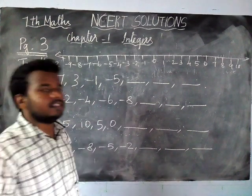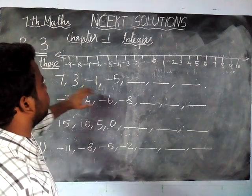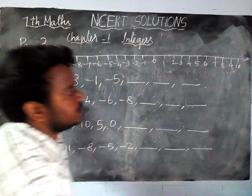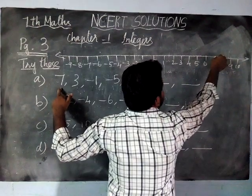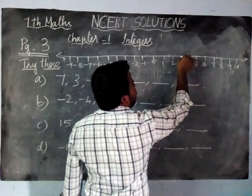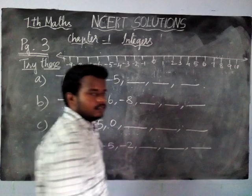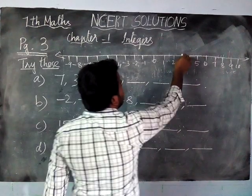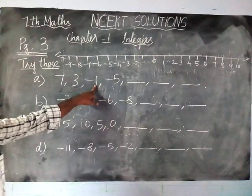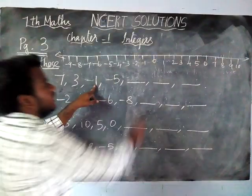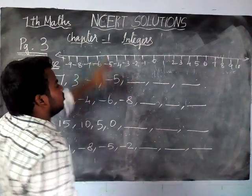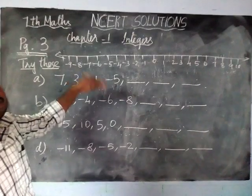Listen, here there is a pattern: 7, 3, -1, -5. That is a common difference. Check it on the number line. Number 7 is here. From 7 to 3 is 4 jumps. From 3 to -1 is also 4 jumps. From -1 to -5 is again 4 jumps. So the common difference is 4, decreasing each time.